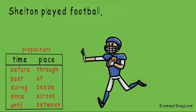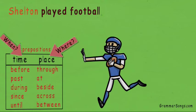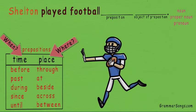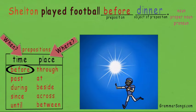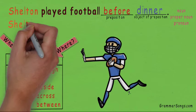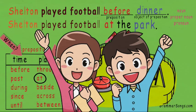Shelton played football. We know this is a complete sentence because Shelton is our subject — he is who this sentence is about. Played football is our predicate because it tells what Shelton did. Although this is a complete sentence, it doesn't give the listener or reader much information. I can add a prepositional phrase to tell where or when Shelton played football. If I wanted to tell when, I could choose a preposition of time like 'before': Shelton played football before dinner. If I want to tell where, I could use a preposition of place like 'at': Shelton played football at the park. A prepositional phrase can help us know when and where exactly.